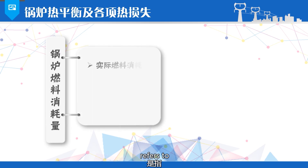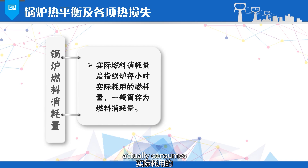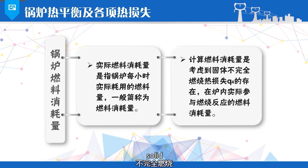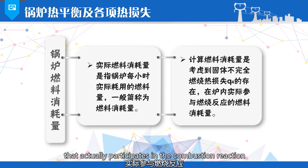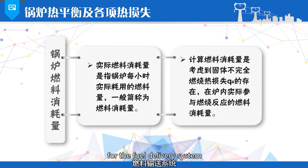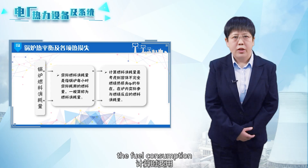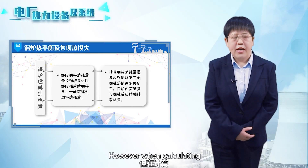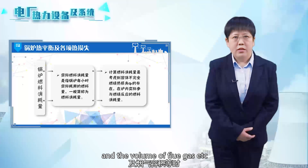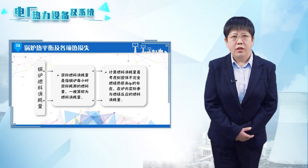The actual fuel consumption refers to the amount of fuel that the boiler actually consumes per hour, often simply referred to as the fuel consumption. The calculated fuel consumption takes into account the existence of solid incomplete combustion heat loss — it represents the amount of fuel that actually participates in the combustion reaction inside the furnace. These two types of fuel consumption serve different purposes. When conducting calculations for the fuel delivery system and the pulverizing system, the actual fuel consumption is used. However, when calculating the amount of air required and the volume of flue gas, it is necessary to use the calculated fuel consumption.